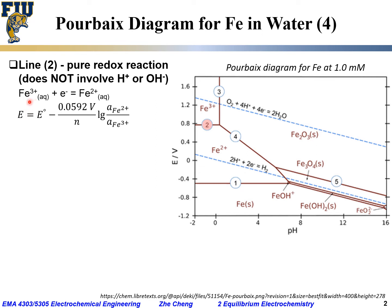From the Nernst equation, the electrode potential for this half-cell reaction equals the standard electrode potential E₀ minus 0.0592 volt divided by n, times the log of the product activity for Fe²⁺ divided by the reactant activity for Fe³⁺ — still assuming 25°C. From the standard electrode potential table, the standard electrode potential for the Fe³⁺/Fe²⁺ couple is 0.770 volt versus SHE.